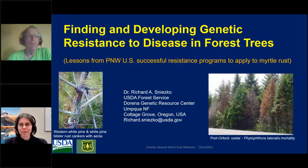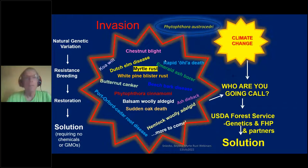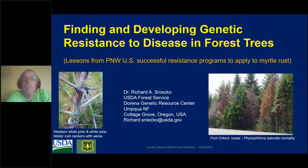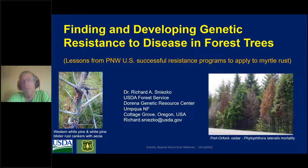Hello everybody. Thank you for the invite to present here. I'm always willing to share information and always looking for feedback on our programs and how to make them better. Today I'm going to talk about finding and developing genetic resistance to disease in forest trees — the same thing could apply to pests and insects. This will be mostly from lessons from the Pacific Northwest United States and actual successful resistance programs, and how they might apply to Myrtle Rust. Almost every slide I show, you'll be able to think about how it would apply to Myrtle Rust.